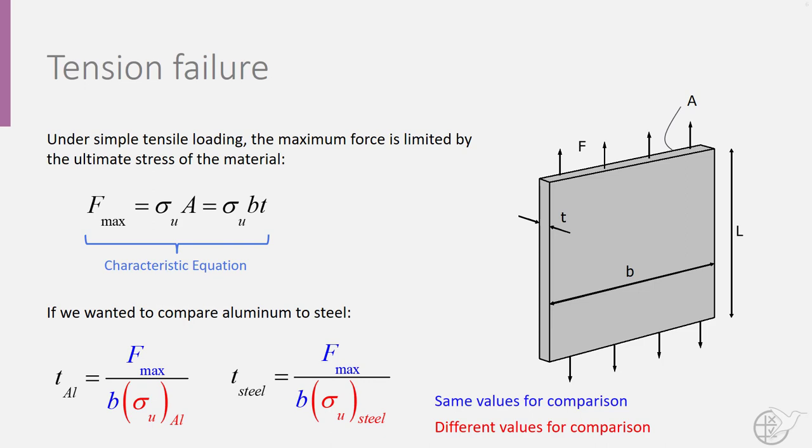Similarly, the width of the plate will be the same as it is dictated by the size of the wing, so as a result we would obtain two different thicknesses for the plate. The different thicknesses for these two materials combined with the different densities of the materials would mean that the weight of the aluminum and steel plates would be different for the same f max.